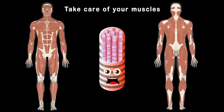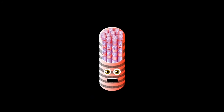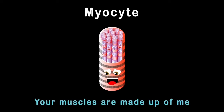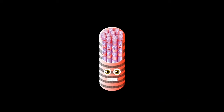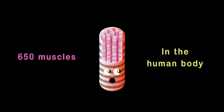So take care of your muscles because they're all made of me. I am microscopic but when working together I am real strong, you see. I am a myocyte; your muscles are made up of me. Here's some of the 650 muscles in the human body.